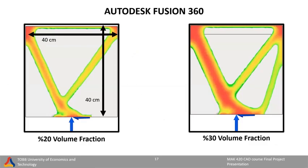The topology optimization studies were also carried out using Fusion 360. We determined a 40 by 40 centimeter plate with specific thicknesses, and 4,000 Newton forces were applied vertically and horizontally to the point of the wheel axle position. The mesh size was determined to be 1 centimeter. Topology optimization was then performed separately for 20% and 30% volume fractions and the obtained results are displayed on screen. Because factor of safety should be kept high in the aviation industry, the 30% volume fraction analysis result was chosen.